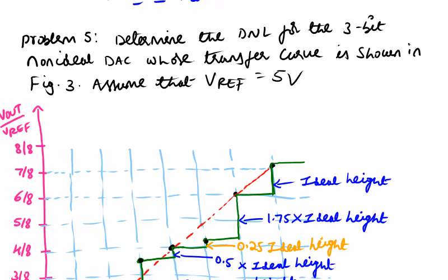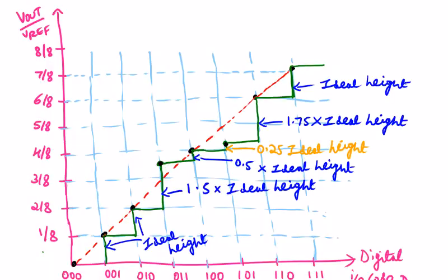Problem 5: Determine the DNL for the 3-bit non-ideal DAC whose transfer curve is as shown in figure 3. Assume V reference equals 5 volts. Look at this transfer curve — it shows V_out divided by V_reference on the output side, and digital codes from 000 to 111 on the input side. You can see the step height, that is the increment.